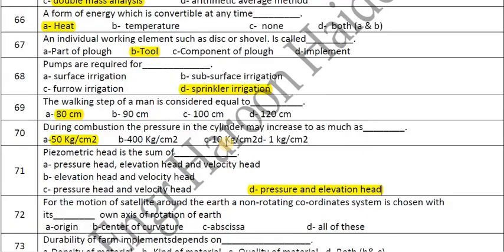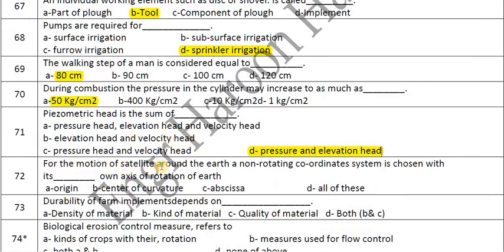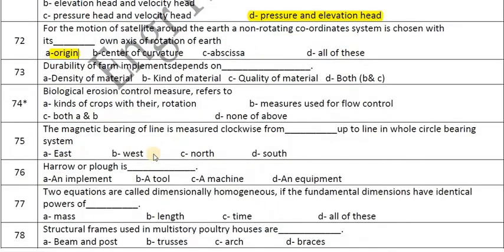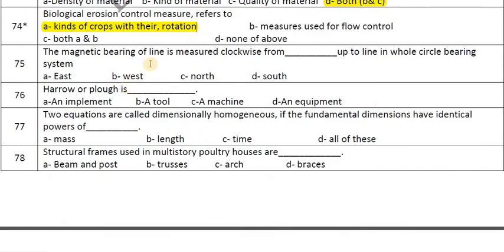For the motion of a satellite around the earth, a non-rotating coordinate system is chosen with its axis on the axis of rotation of the earth. The durability of farm elements depends on the kind and quality of material — both b and c. Biological erosion control may refer to a kind of crop rotation.